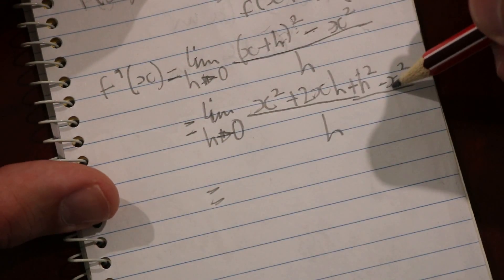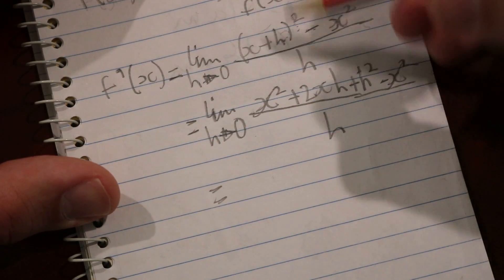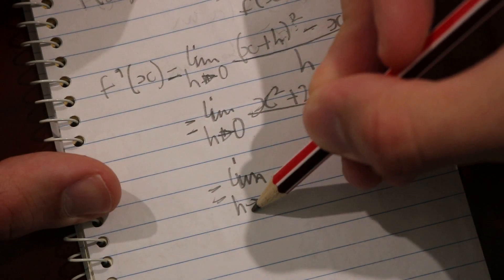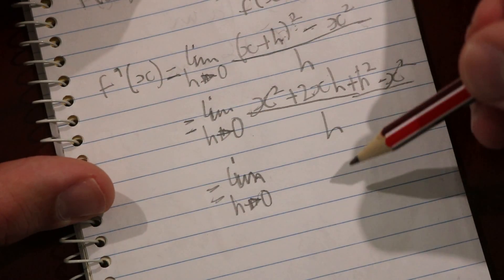The x² terms cancel out, which leaves us 0. We'll write the limit as h approaches 0 again.